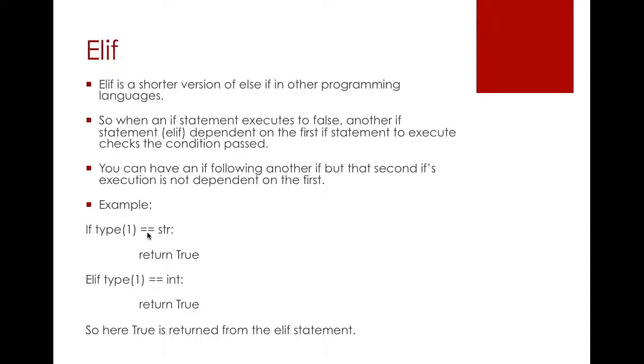If type of one is a string, it means the value of this function here is a string, return true. But we know that one is an integer. So this would be automatically false. Then it goes into the elif statement because this was false. So elif type of one was an int. We know this is true. So you have to return true. Because the elif statement was dependent on if. If was false, it goes into elif. If elif is true, so you return true.